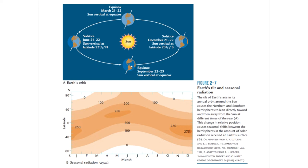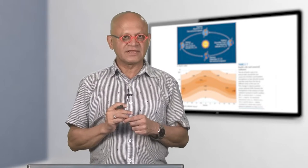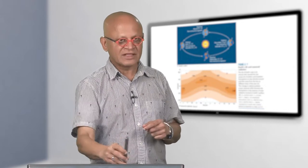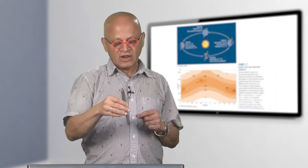During the equinoxes, at any given latitude the length of day and night will be the same. When the northern hemisphere is pointing away from the sun we have winter during the December solstice. Because of this tilt we get seasons on earth — if the earth were not tilted, all latitudes would see the same amount of sunlight all year long and there would be no seasons.